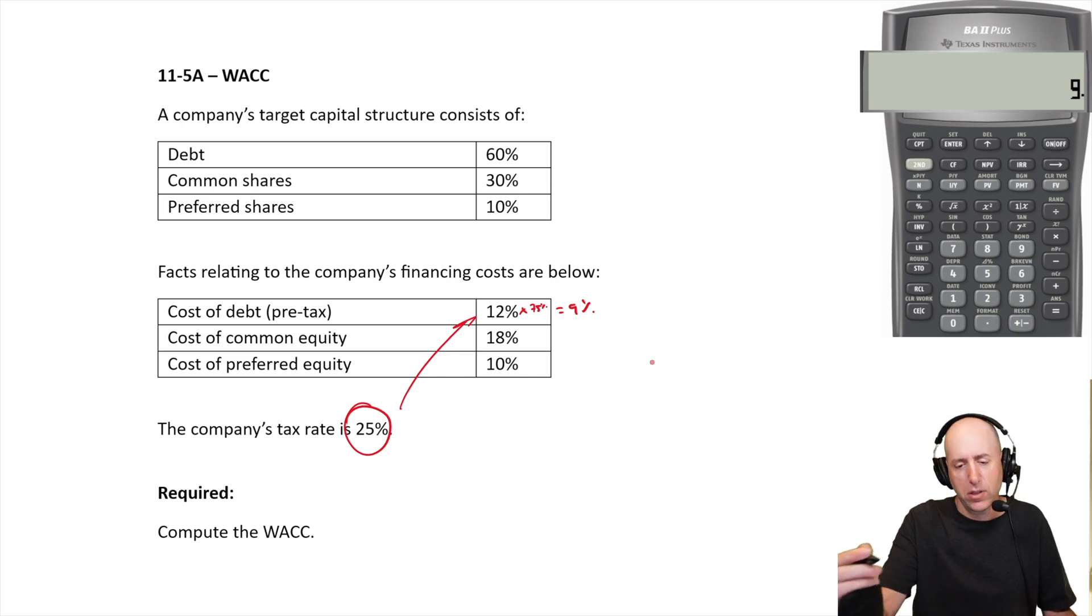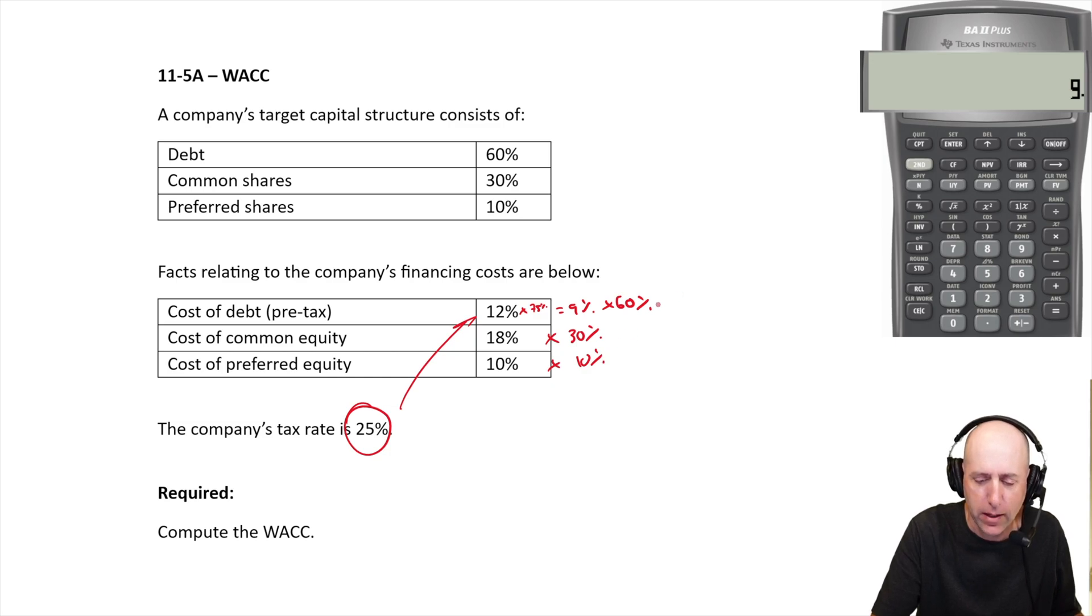Now I just apply the weights. Okay, well debt is 60% of my portfolio at 9%, so let's do a weighted average here. These weights have to add up to 100: 18 times 30%, and 10 times 10%. Let's crunch those numbers.